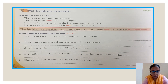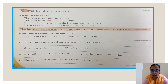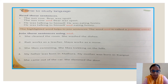Next: my father was born in Mathura. My mother was born in Kanpur. Again we are talking about two different people, so: my father was born in Mathura and my mother was born in Kanpur. Next: she came out of the car. She slammed the door. So we write: she came out of the car and slammed the door — we do not write she again.